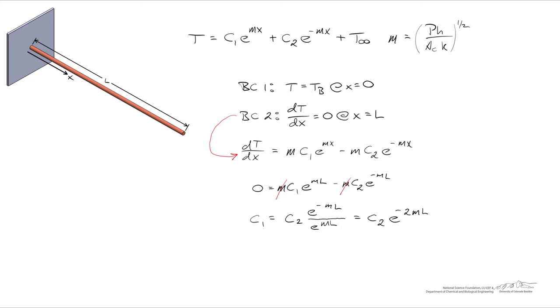So now let's apply our first boundary condition to the temperature profile, in which T is equal to Tb at a value of x equals zero. And when x equals zero, both of the exponential terms go to 1, and we're left with, in this case, our expression T becomes Tb equals C1 plus C2 plus the ambient temperature T infinity.